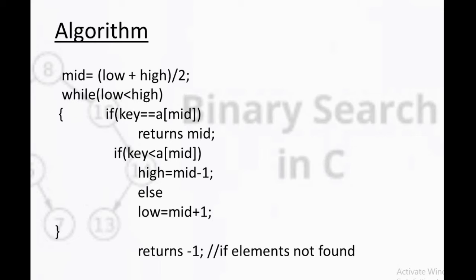Now we directly move to the algorithm part. As we know, mid equals low plus high divided by 2. We use a while loop to compare low and high. If low is less than high, we enter the if statement and compare the key with array mid. If key is less than array mid, then high equals mid minus 1. Otherwise, low equals mid plus 1. If we are not finding any element in the given list, then return minus 1. This is the algorithm part.